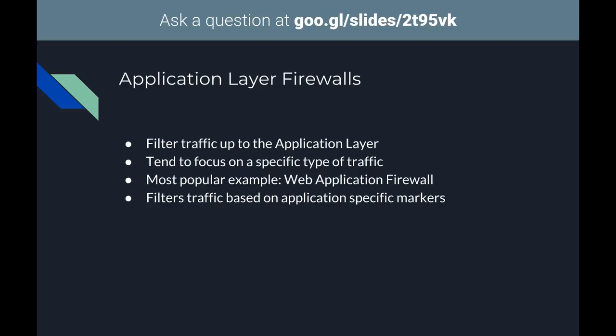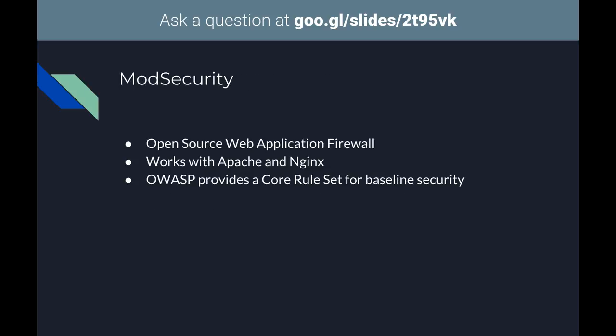Application layer firewalls are more interesting — you can filter traffic up to the application layer, looking at things like DNS, HTTP, email. They're generally significantly more specific: a web application firewall won't care about non-HTTP/HTTPS traffic, so you get much more fine-grained control. The most prevalent example is a web application firewall. mod_security works well with Apache and nginx. OWASP provides a core rule set for baseline security that's easy to spin up. I'll spin one up real quick.